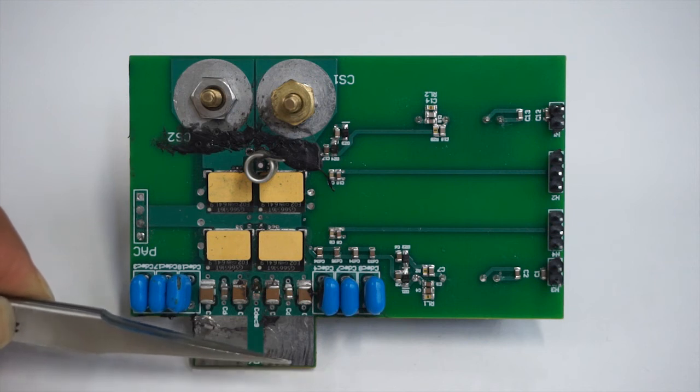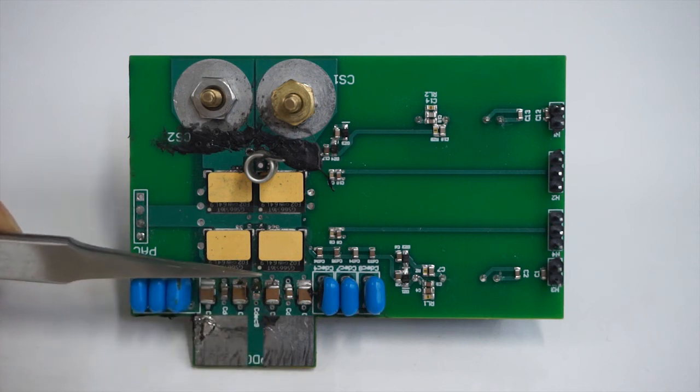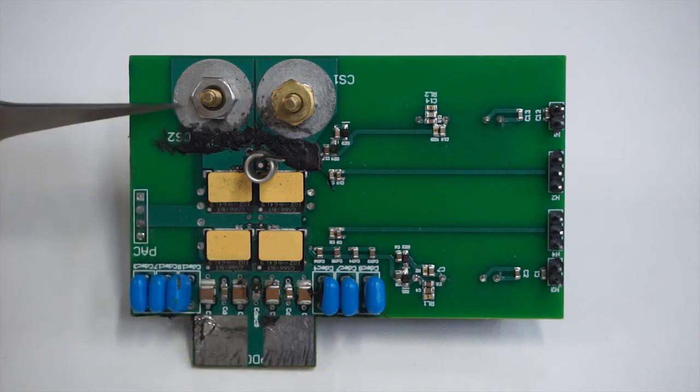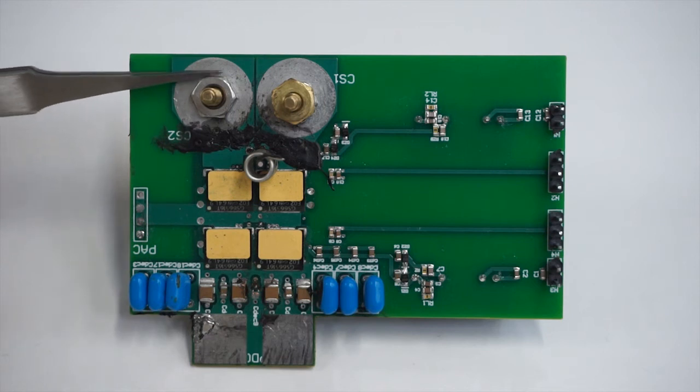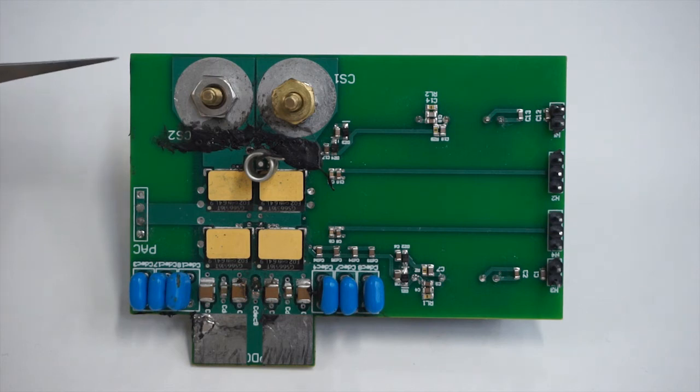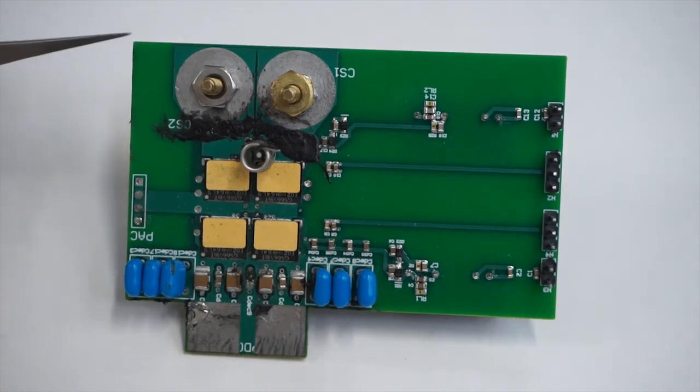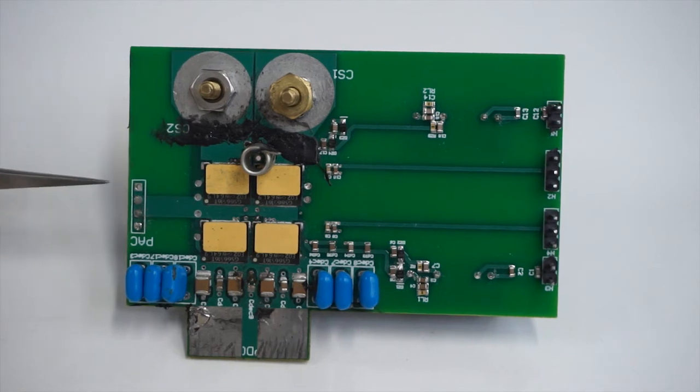My power loop starts from DC plus, then through both devices and then each shunt which is in series with each device. And then it goes to the other side of the board, which makes my power loop as small as possible.